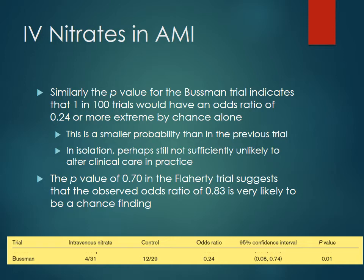That would be statistically significant since it's less than 0.05, and the confidence interval also bears this out — it ranges from 0.08 to 0.74 and does not encompass one. Basically, if you were to carry out this trial a hundred more times, there'd only be one in a hundred that would actually have an odds ratio of at least 0.24 or more extreme just by chance alone. Because this is a smaller probability, the chances of making a type one error in this case are pretty low. So we can go ahead and take that data and reject the null hypothesis, saying that intravenous nitrates was associated with a lower odds of death compared to receiving nothing.